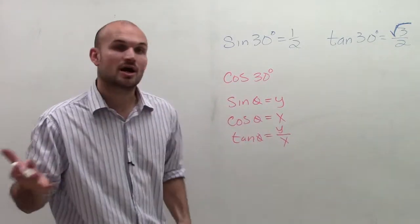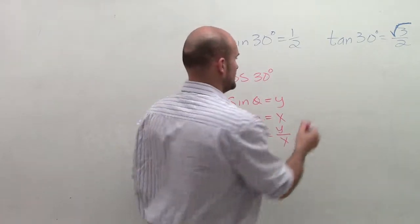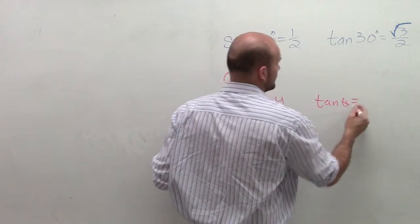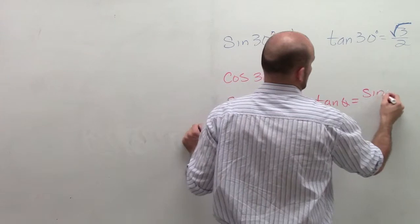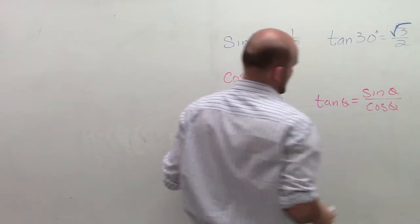We've looked at the identity that says that the tangent of any angle is represented by the sine of that angle over the cosine of your angle. So this is another one of our identities that we have to make sure we understand.